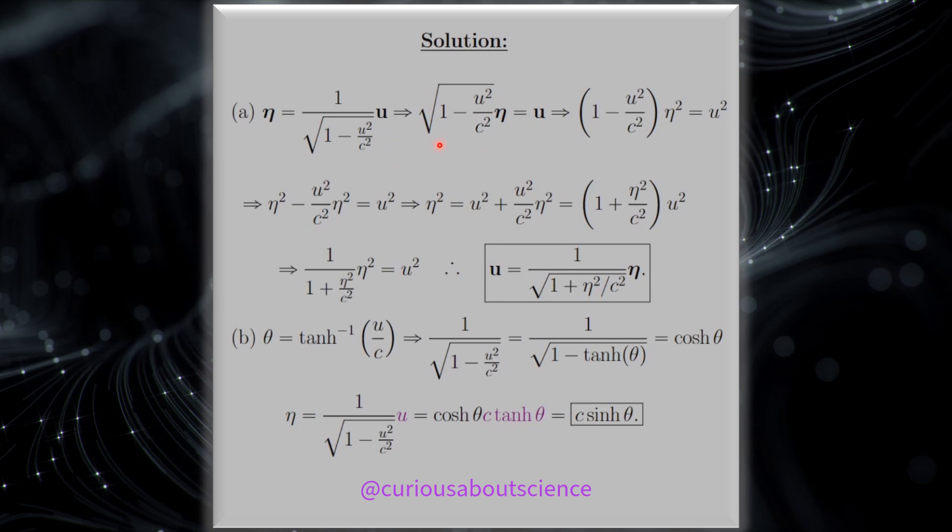So first things first, again solve for U. We'll isolate that, get eta, or get that square root over to the eta side, square both sides, isolate down the U out of everything.